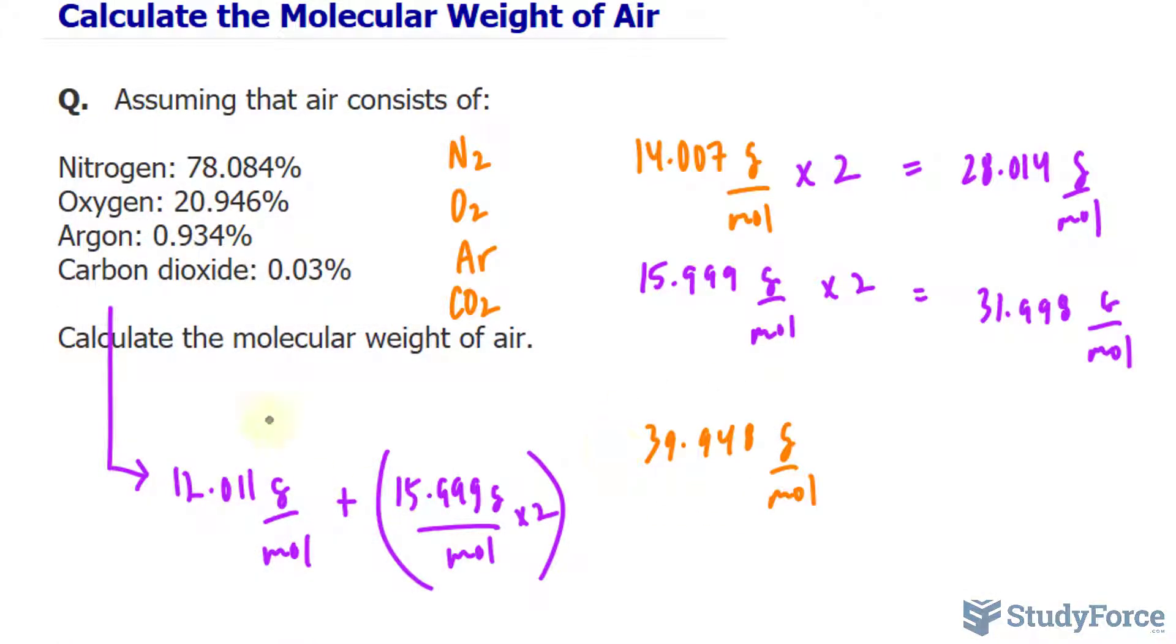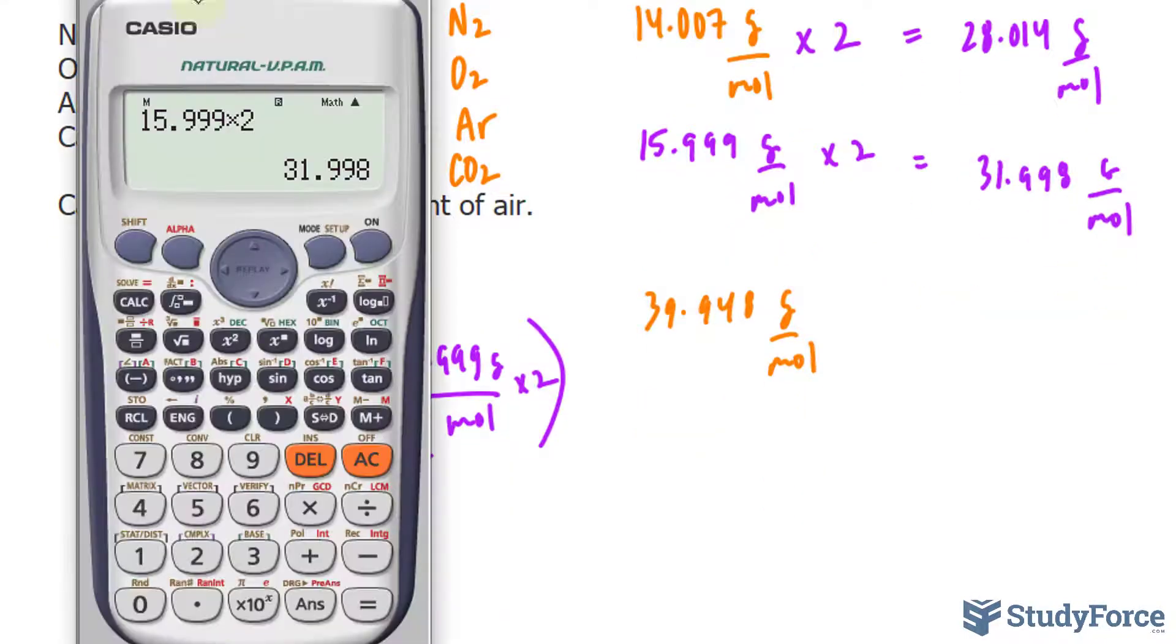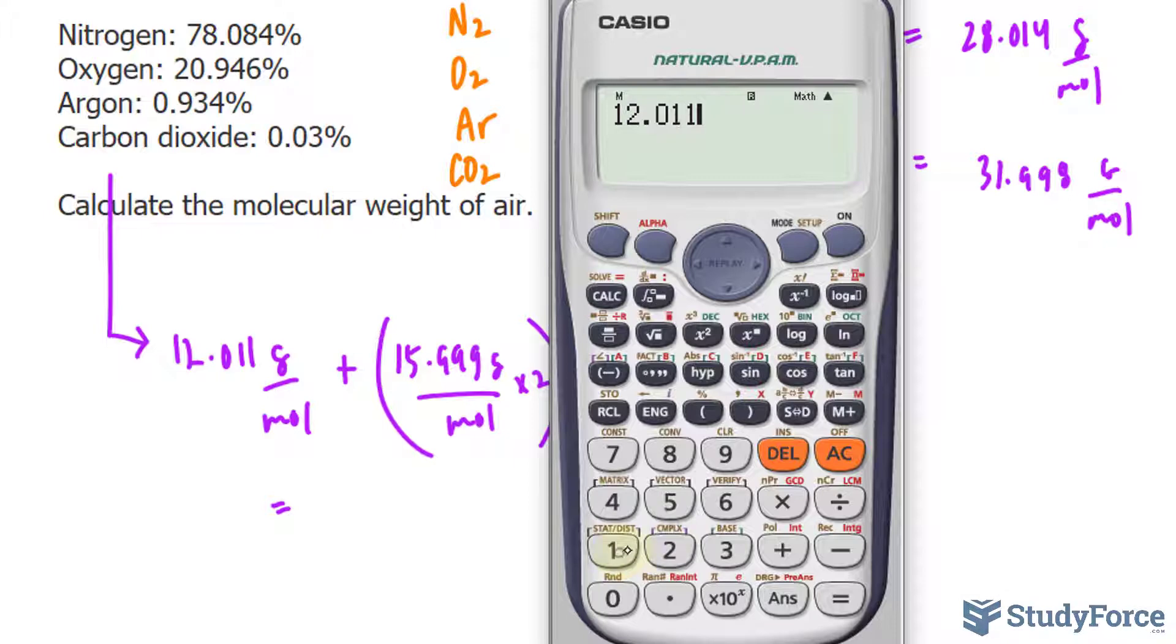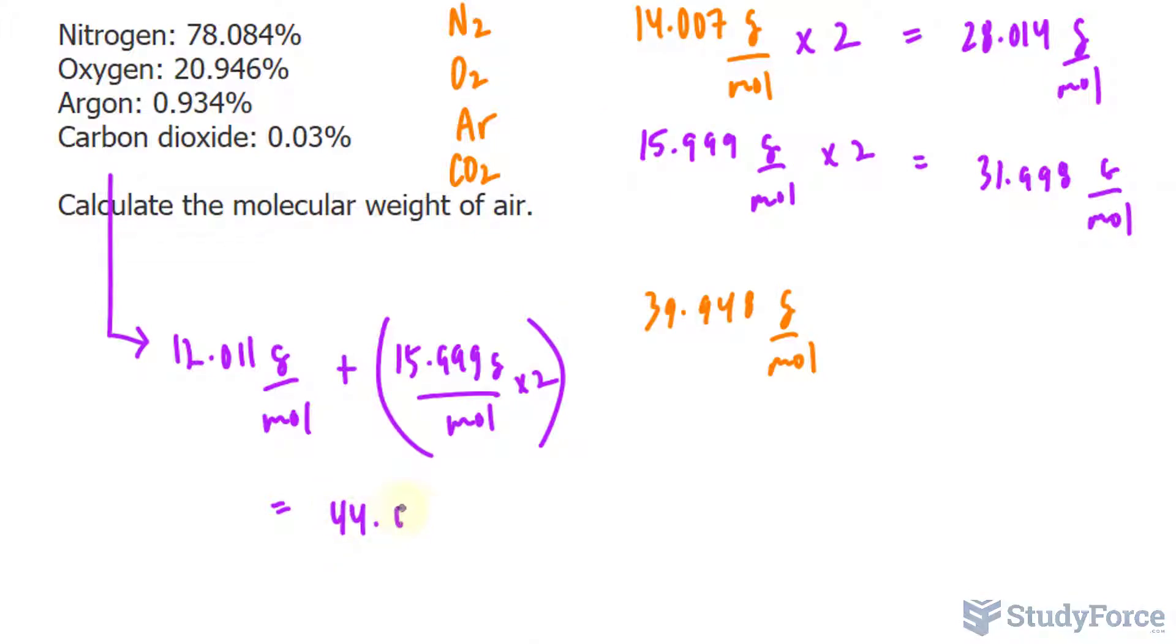And this one sums up, let's find out, 12.011 plus 15.999 times two, and we get 44.009 grams per mole.